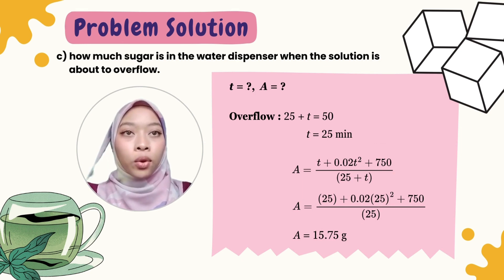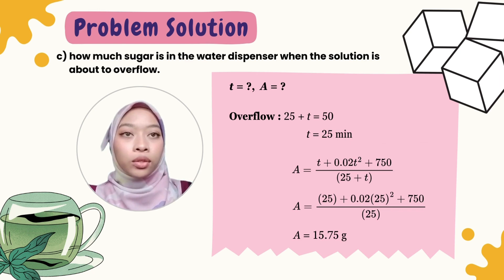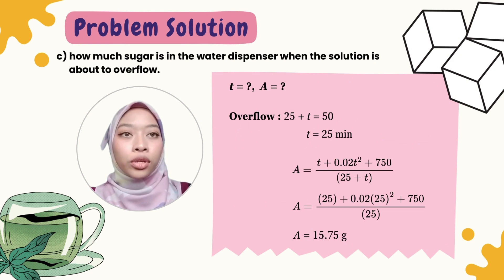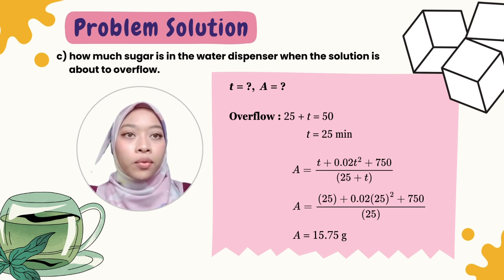For part C, we find how much sugar is present when the solution is about to overflow. The dispenser overflows when 25 + t equals 50, so t equals 25 minutes. Substituting t equals 25 into the equation A equals (t + 0.02t² + 750) / (25 + t).